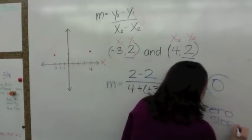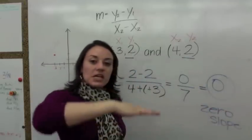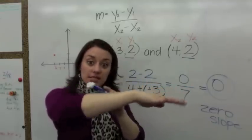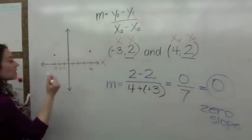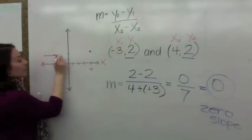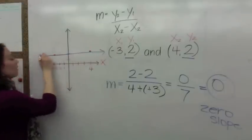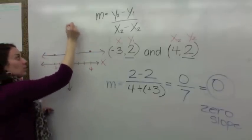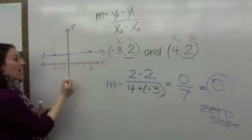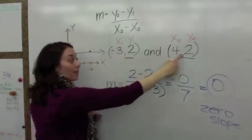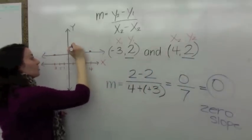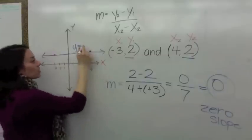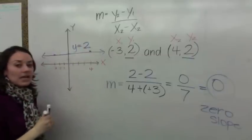That doesn't mean that the slope doesn't exist — it just means that the line is side to side, or horizontal. And if you connect these points, you see that it's horizontal. The y-coordinate it goes through on the y-axis is 2, so your equation for this horizontal line is y equals 2.